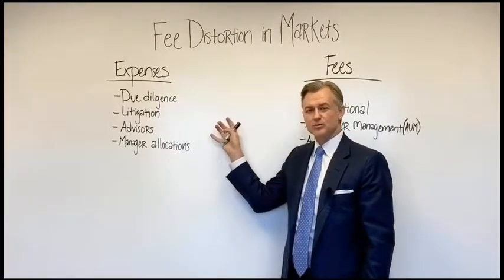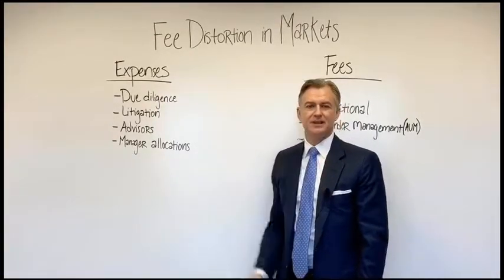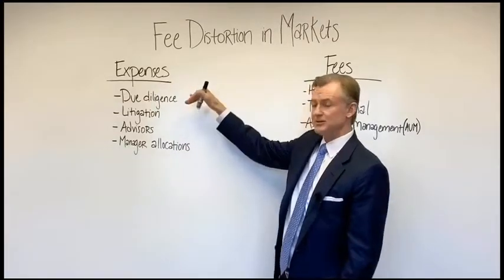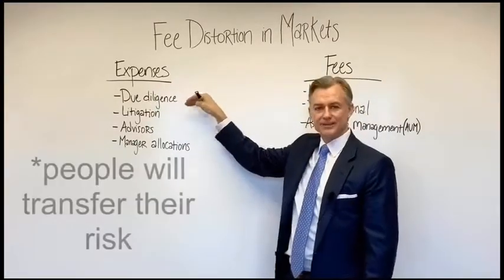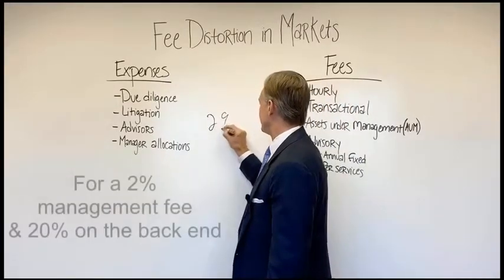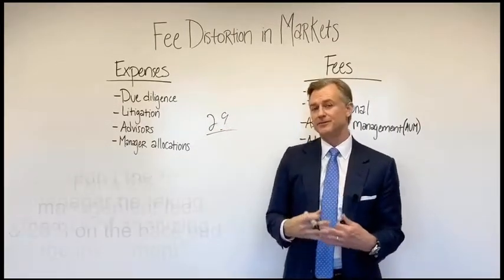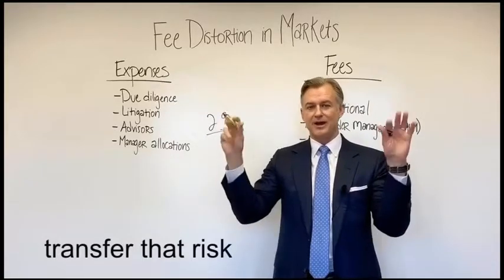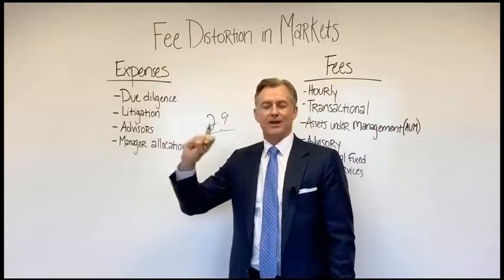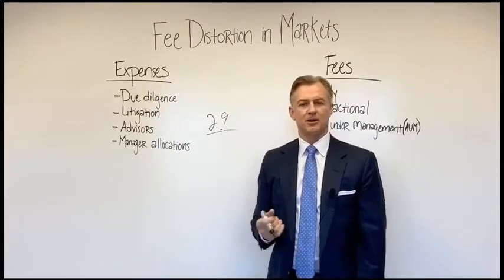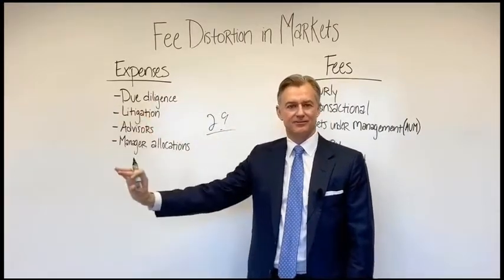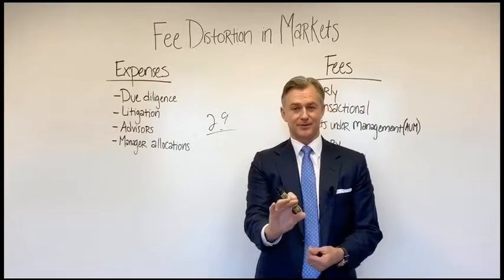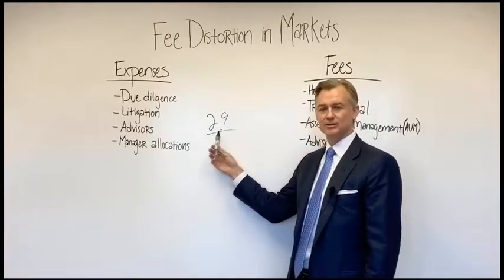In expenses — more common in PE and fund-type investments, but also in hedge funds and public equity — due diligence abuse is significant. For a 2% management fee and 20% of the back end, the fund manager should be bearing the risk of analyzing the investment. But instead, they transfer that risk through a CYA process to investors. Because the expense is borne by the investors, there's no care about cost — they'll overpay for CPAs, attorneys, and analysts to document risk and protect themselves from investors rather than bearing that risk themselves.